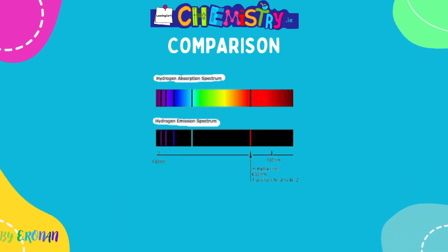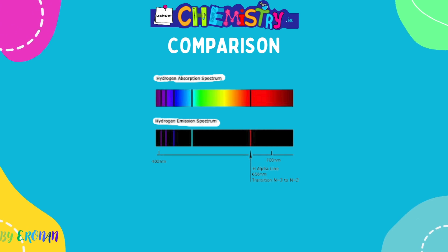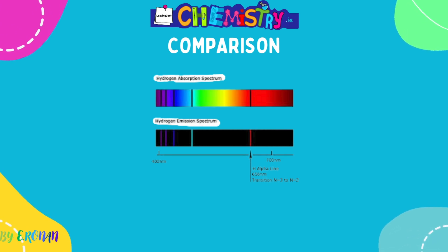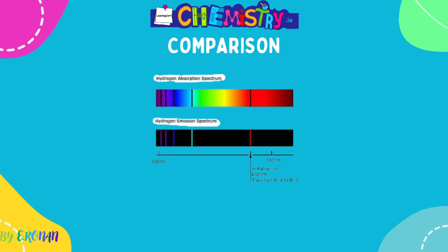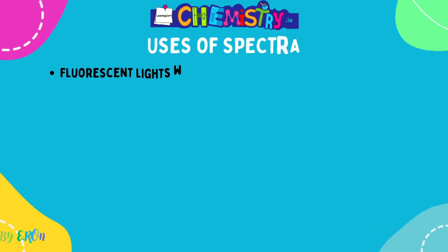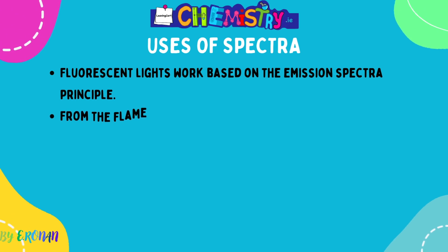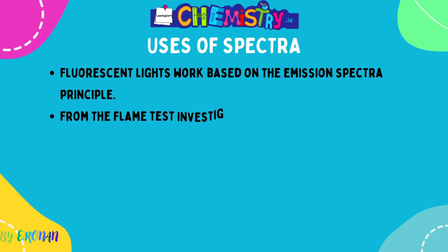The dark lines in the absorption spectrum were in the exact same position as the colored lines in the emission spectrum. If we look at the hydrogen absorption spectrum at the top and the emission spectrum at the bottom and combine those two, we would form a continuous spectrum. So hydrogen emits light but it also absorbs white light when it is passed through. We need to be able to distinguish the difference between an emission line spectrum and an absorption spectrum.